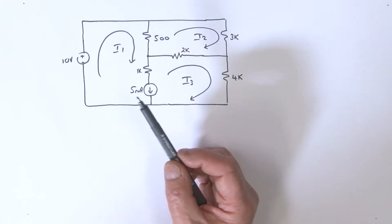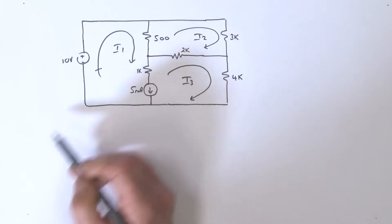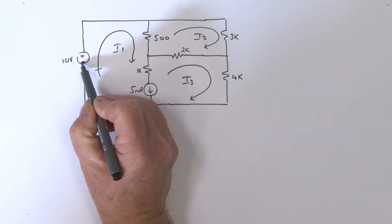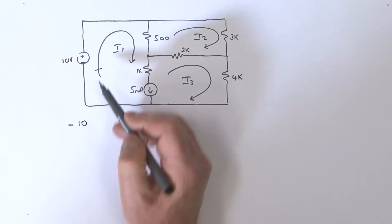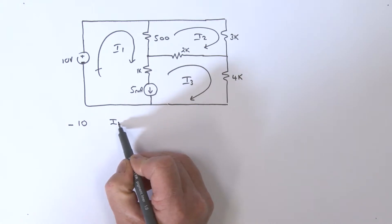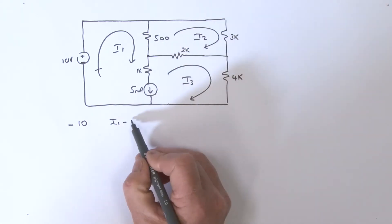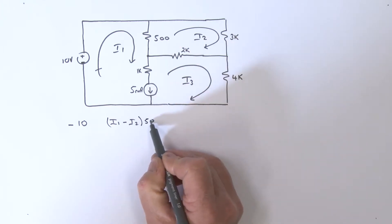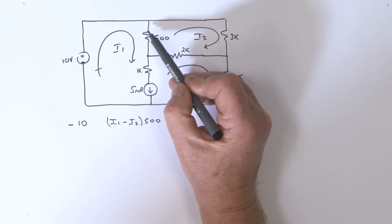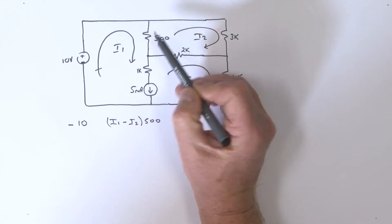Let's go ahead and start right here. Since we're hitting the minus sign first, we're going to call that minus 10. Coming around, we've got the i1 mesh leading, so that's i1 minus i2 - let's put a bracket around this - multiplied by 500. Because i1 is leading, we're defining the voltage across that 500...